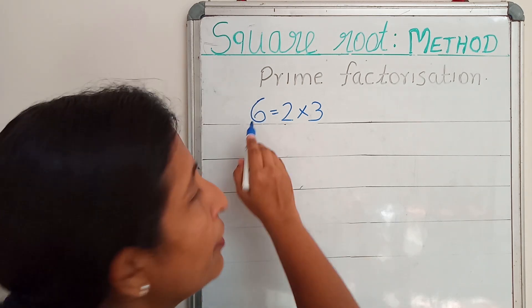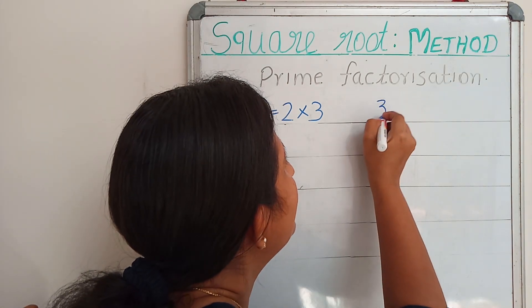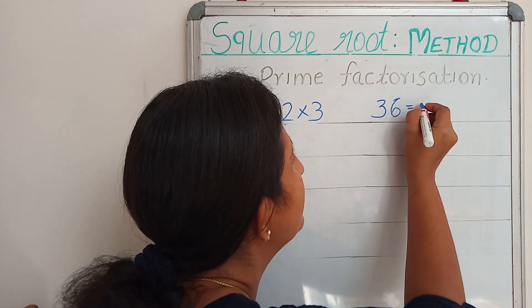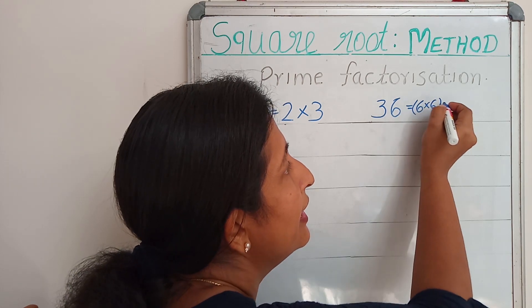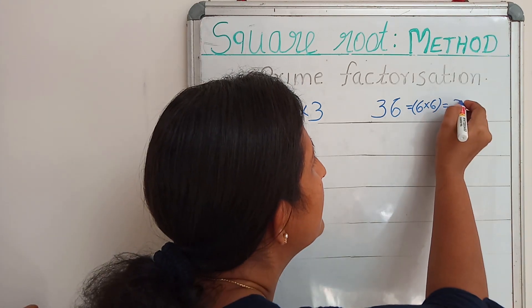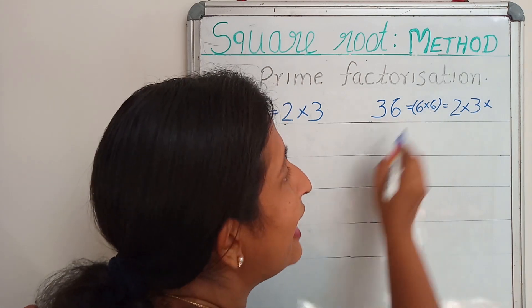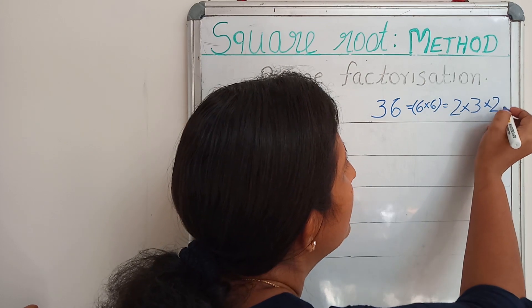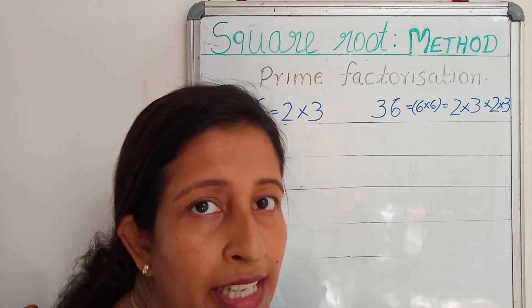What is the square of 6? 6 × 6 is 36. Then 36 can be written as 6 × 6. Since 6 can be written as 2 × 3, the other 6 can again be written as 2 × 3. So 36 equals 2 × 3 × 2 × 3 — these are the prime factors of 36.